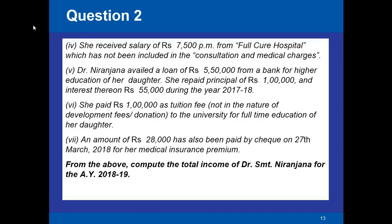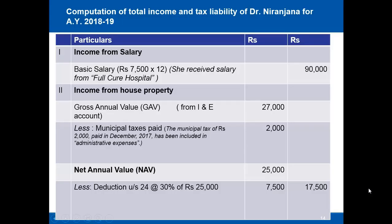We are asked to compute the total income of Dr. Srimati Niranjana for Assessment Year 2018-19. Let us begin with income from salary. She received rupees 7,500 per month from Full Cure Hospital, which was not included in the income and expenditure account. For the whole year, this amounts to rupees 90,000 as income from salary.